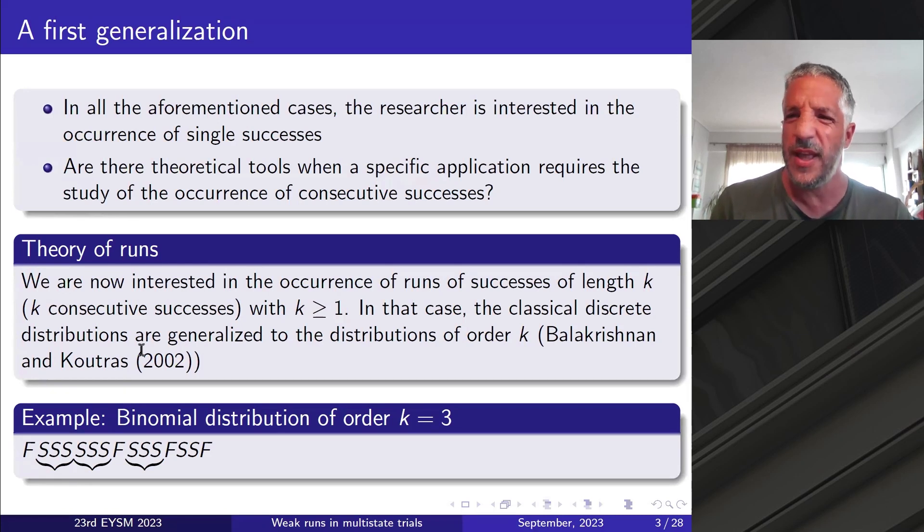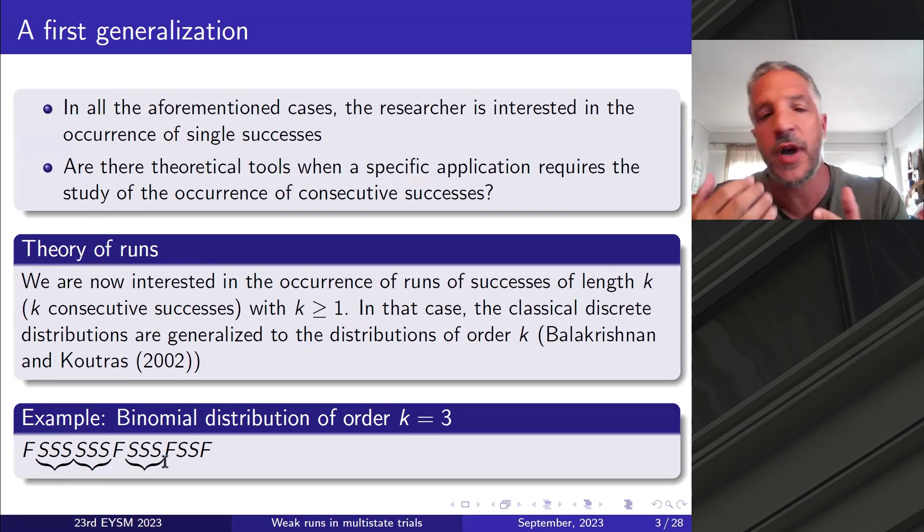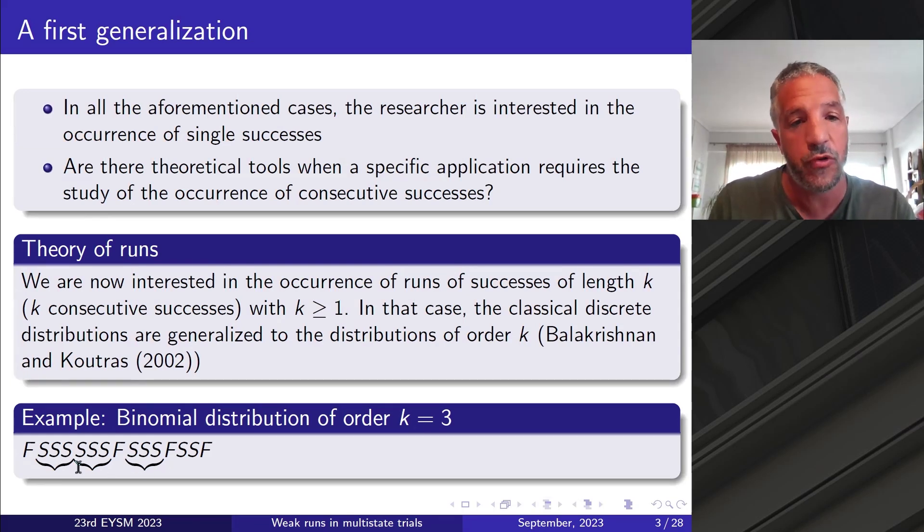In order to give you an example and help you familiarize with the area, let us assume that this sequence of outcomes has arisen. If we were interested in the classical binomial distributions, then here we would count 3, 6, 9, 11 successes. But now, if we are in the case of binomial distribution for k equal to 3, we want to count runs of 3 successes. So here we would count 3 such runs. Why? Because our application requires triples of runs and not just single successes.